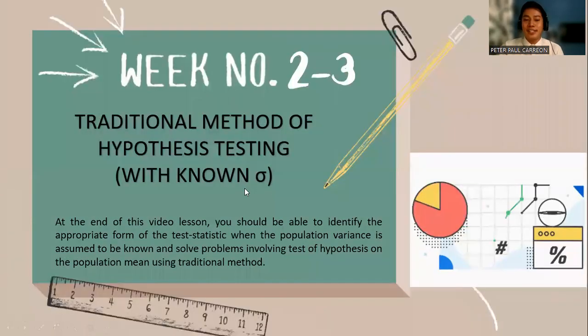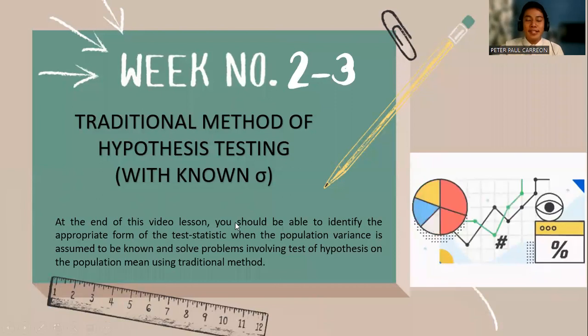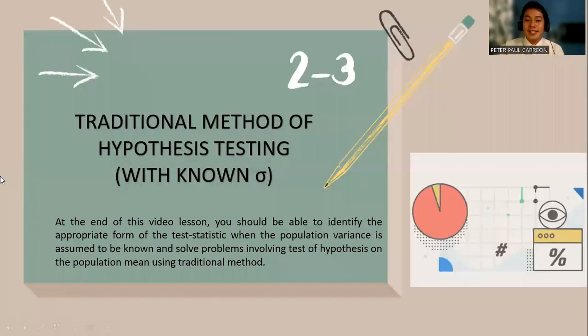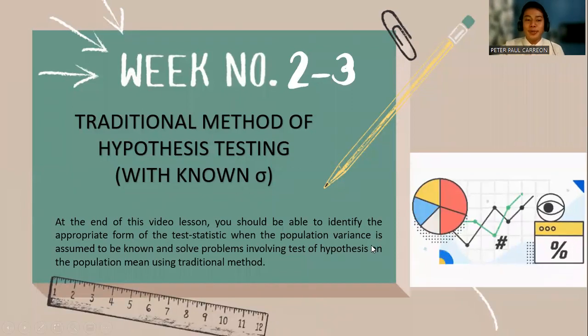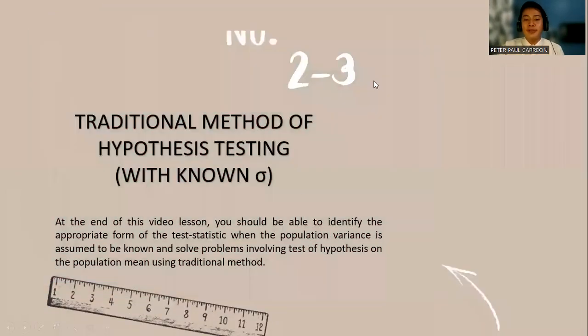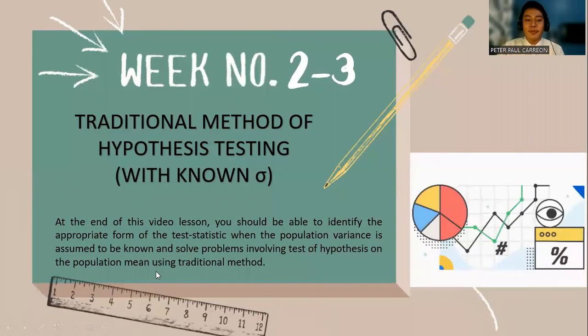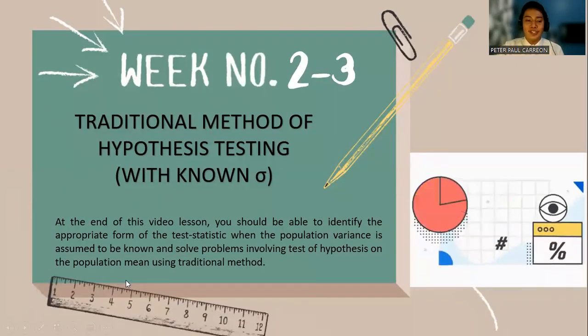At the end of this video lesson, you should be able to identify the appropriate form of test statistic when the population variance is assumed to be known and solve problems involving the test of hypothesis on the population mean using the traditional method.